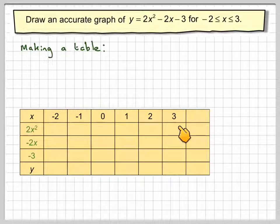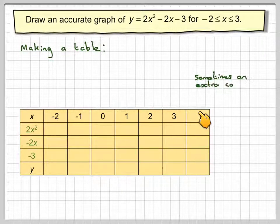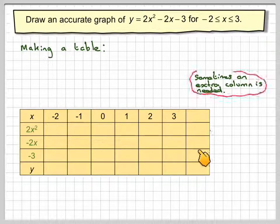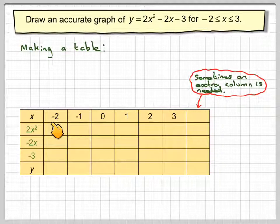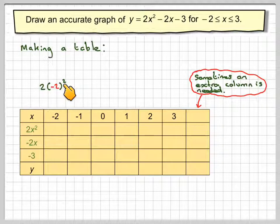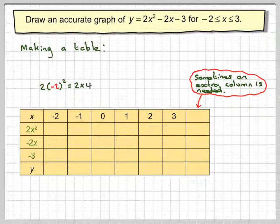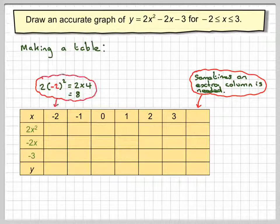We've only put in integer values here. Sometimes we need an extra column, but not always — I'll show you what this is needed for later on. In this cell we have to work out 2 times minus 2 squared. Notice I've put the minus 2 in brackets: minus 2 squared is 4, so we've got 2 times 4, which is 8. Therefore in this cell we put an 8.